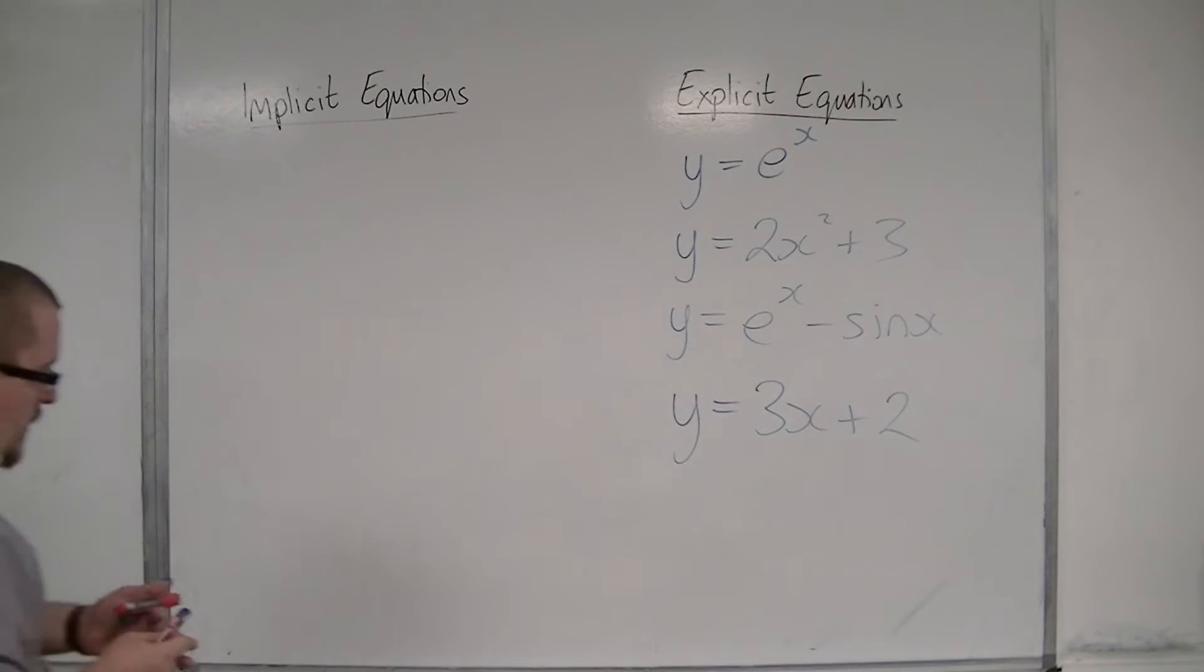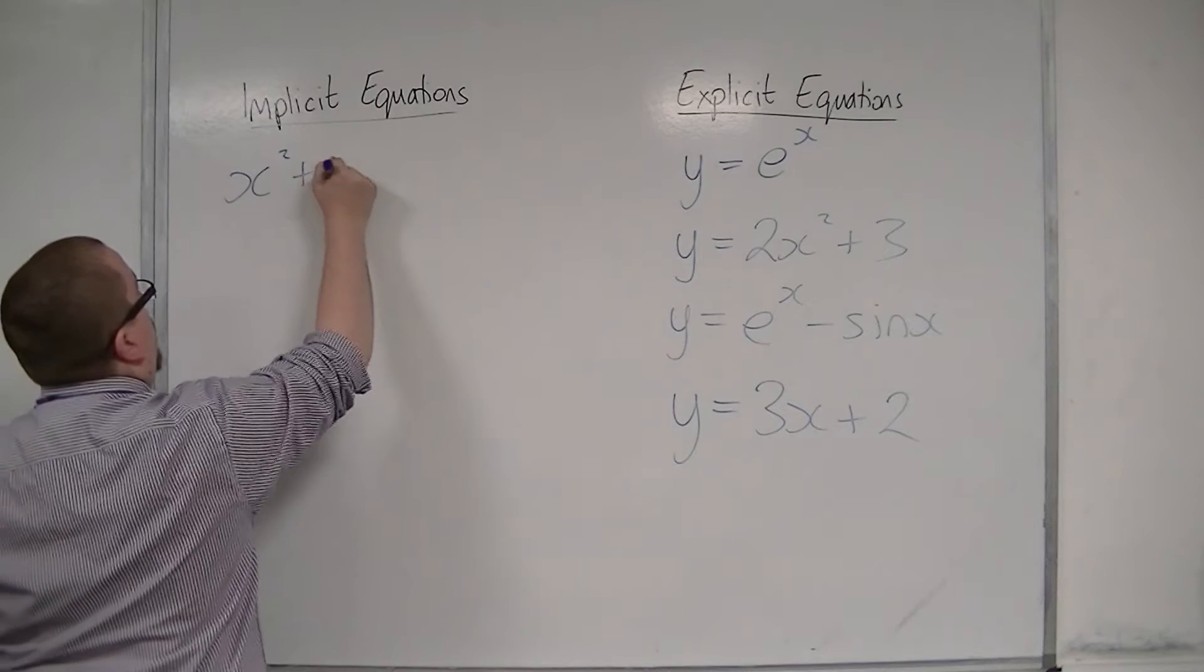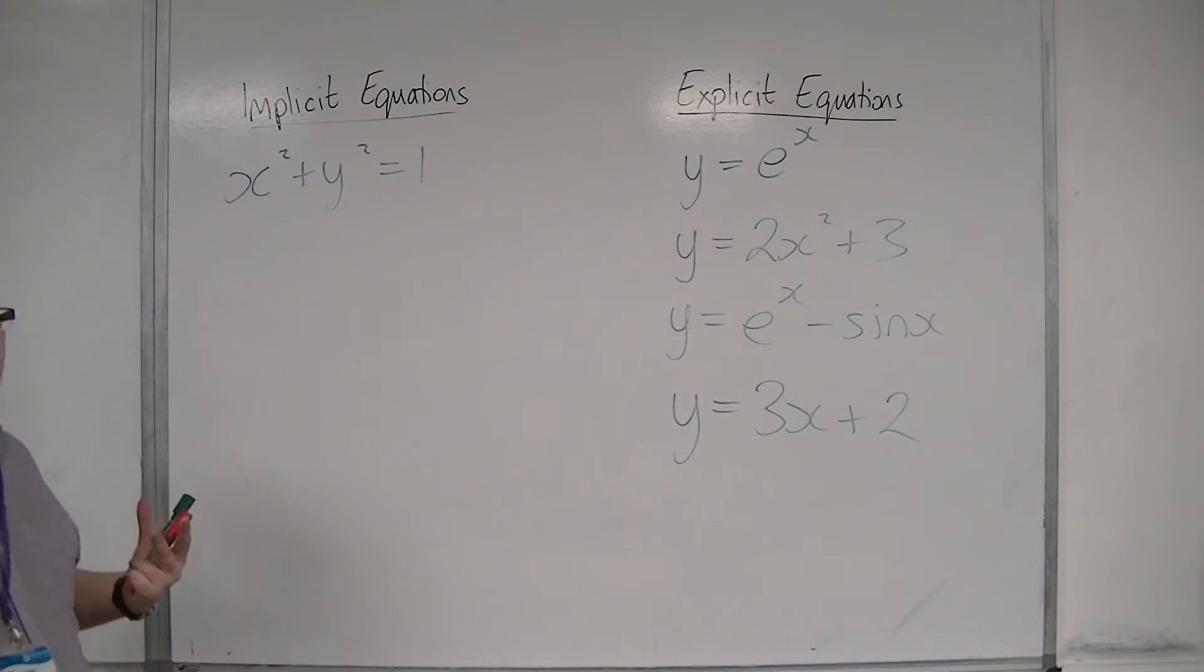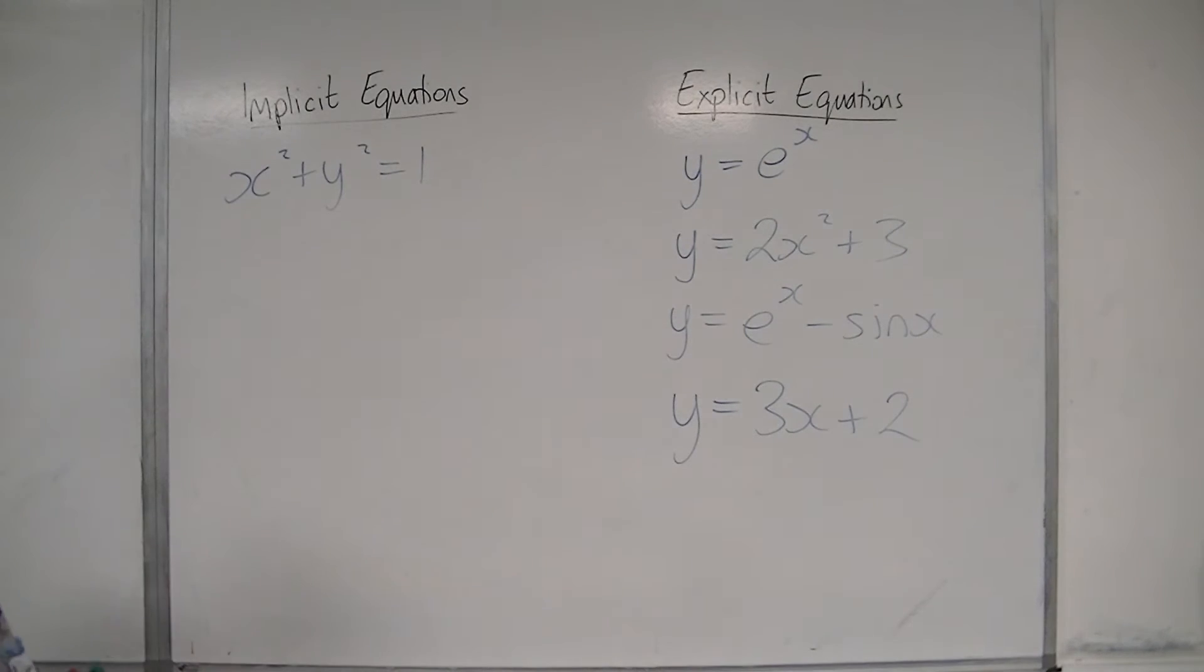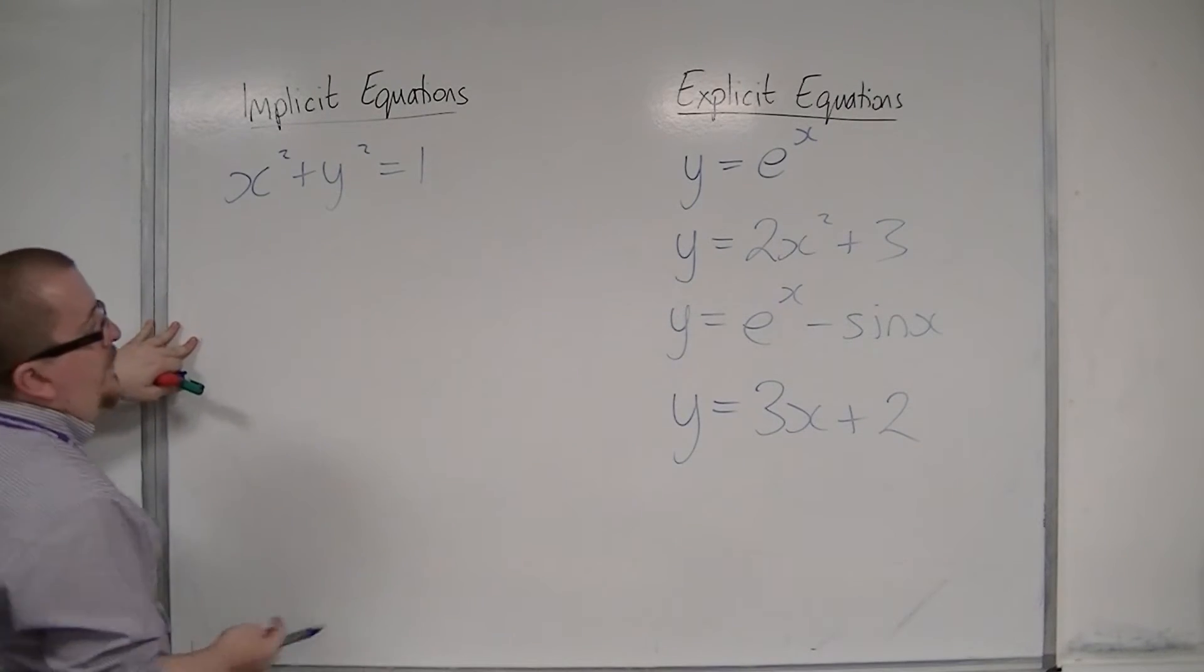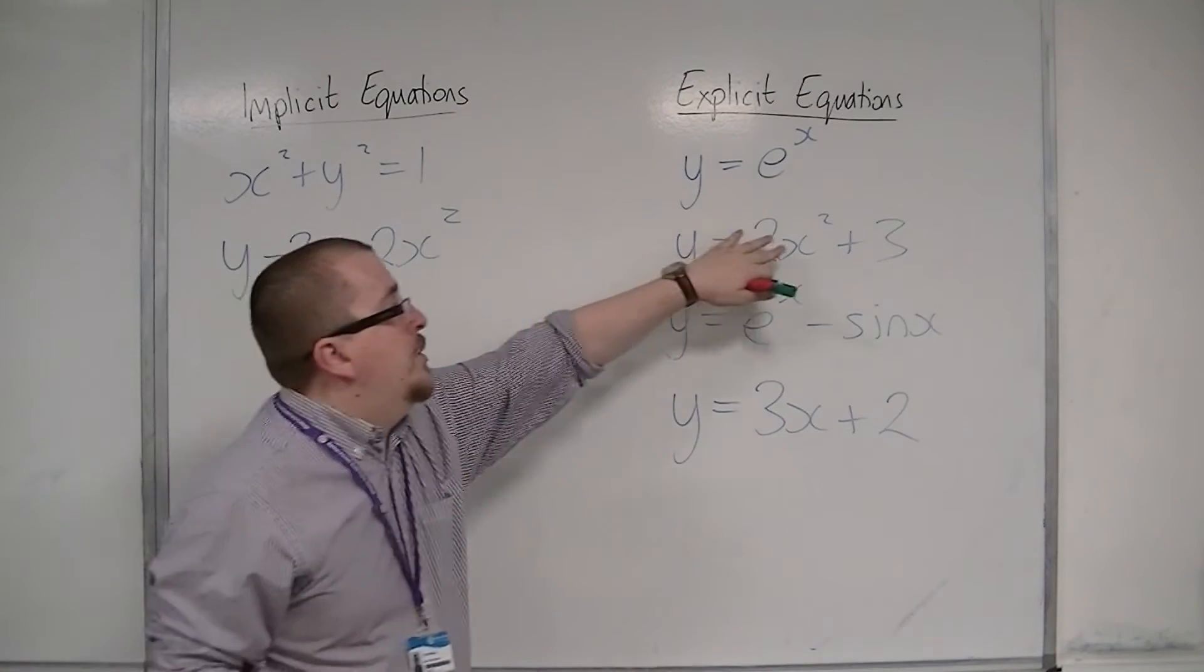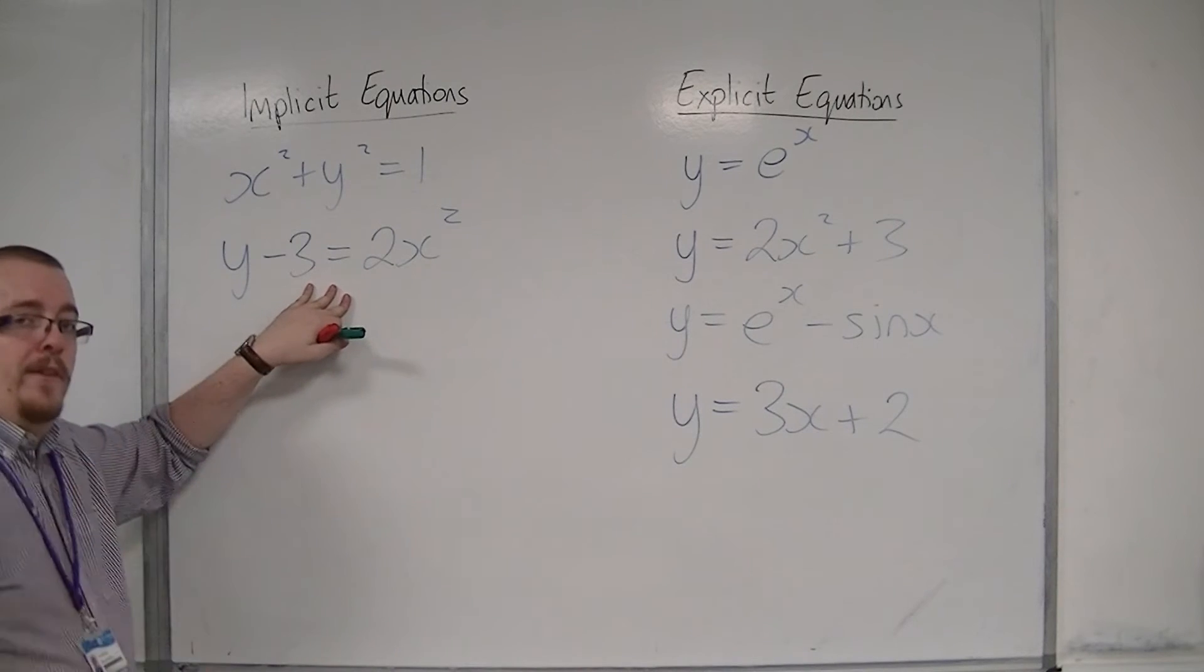Implicit equations would look something like this. So as I said, x² + y² = 1. This is an implicit equation because we don't have y or x, for that matter, explicitly stated as a function of the other variable. We could also take one of these equations and just rearrange it. We could have, for that second one, y - 3 = 2x². They're the same equation, but this is in an explicit form, and this one is in an implicit form.